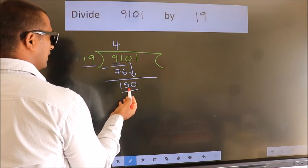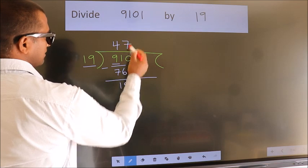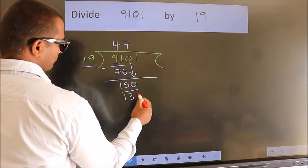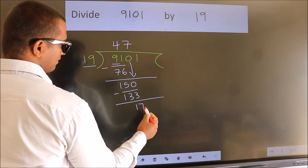A number close to 150 in 19 table is 19 sevens, 133. Now, we subtract. We get 17.